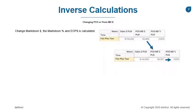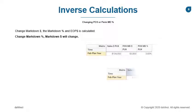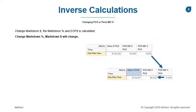This rule is the same for both POS and permanent markdowns. Once again, I'm going to hold my sales — they will remain the same. I'm going to change my markdown percent, and that will update my markdown dollars. My end of period inventory will then be recalculated. Both POS and permanent markdowns follow the same rule.